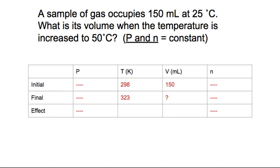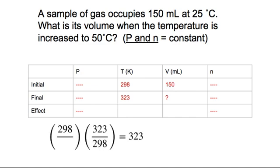Now to find the effect, what we want to know is what do I have to multiply 298 by in order to get 323? And if you think about it, what you're multiplying by is 323 divided by 298, because the 298 will cancel and you'll just get 323. So that's the effect.